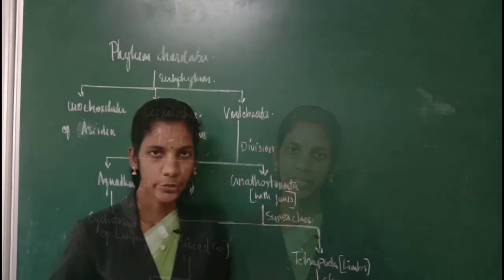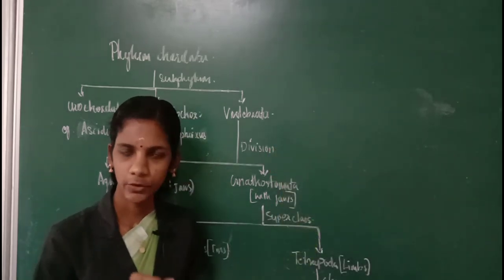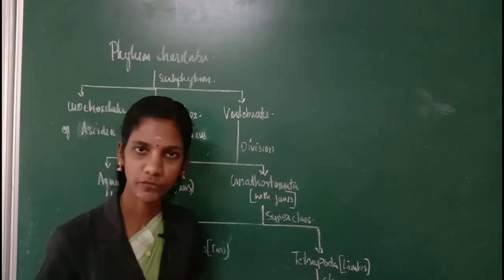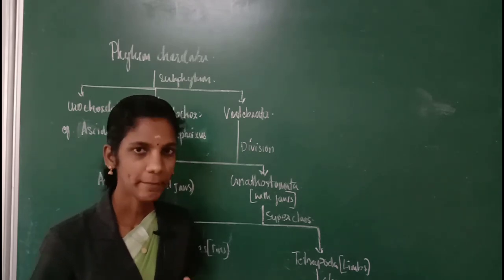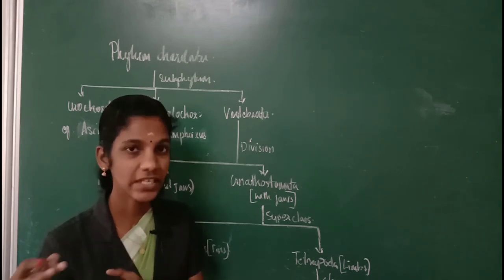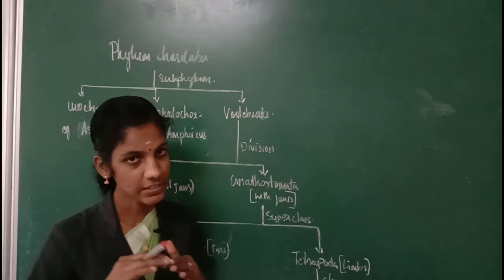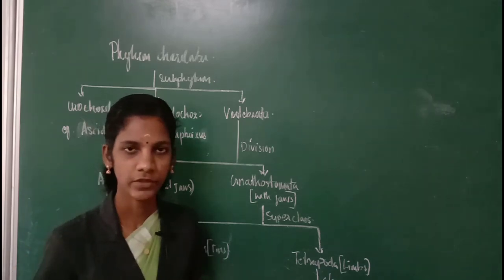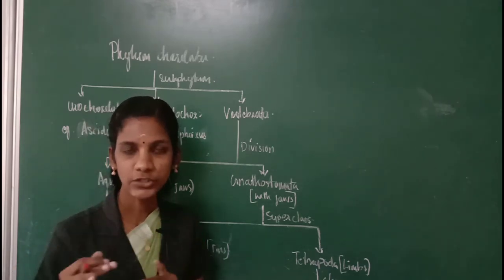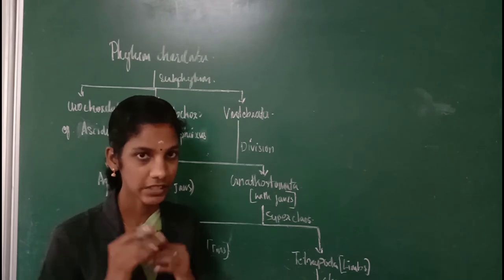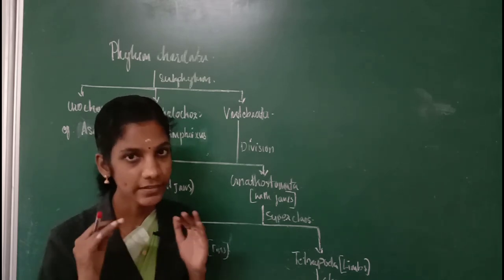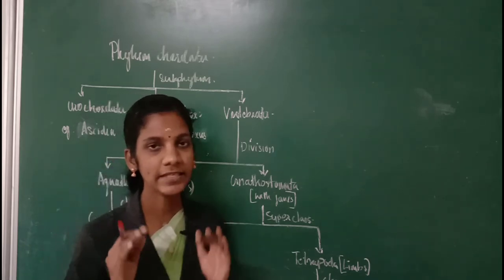We can easily identify an organism on the basis of the presence or absence of notochord. In some animals this notochord can be seen in some stages of their life; in others it will be present throughout their life. On the basis of the fate of notochord, we can classify phylum Chordata under three main subphyla.